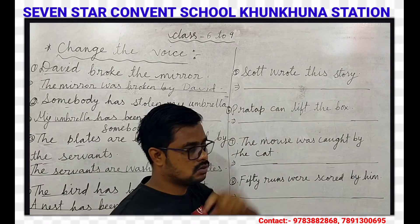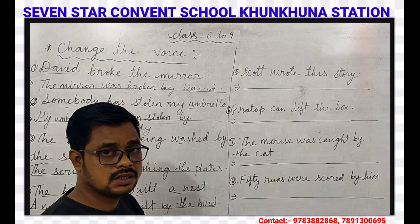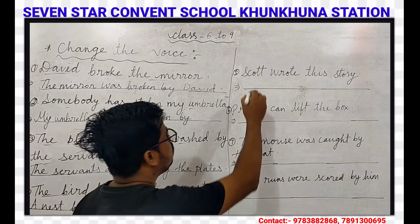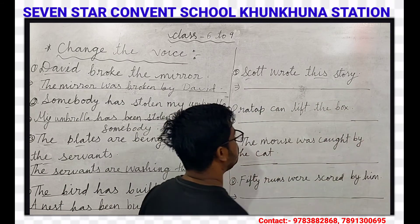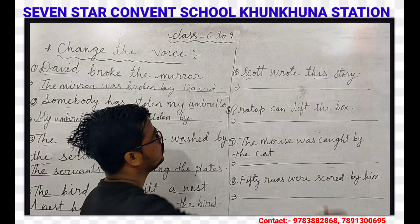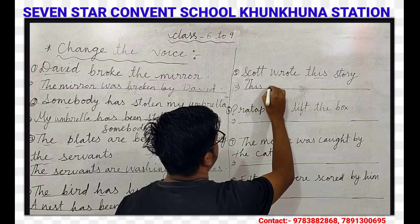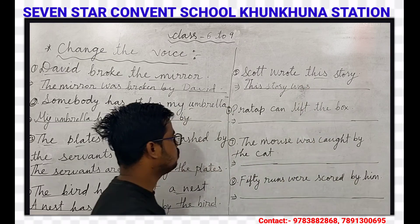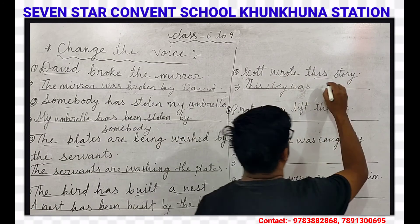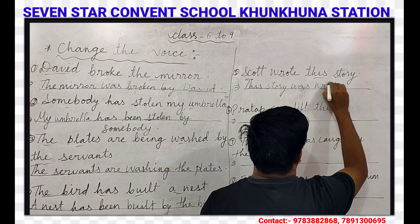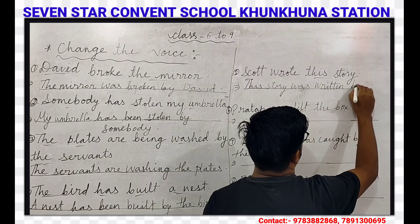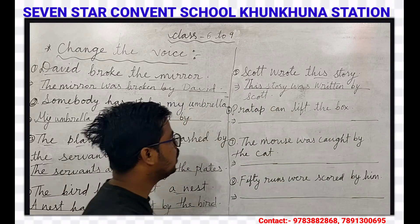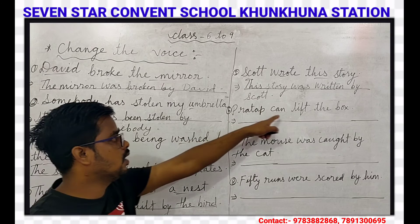Our next question is: Scott wrote this story. This sentence is simple past tense and it is in active voice. We have to change this into passive voice. Scott is the subject and this story is the object. This story will take the place of the subject. This story is singular, so the helping word 'was' will come here. The verb becomes 'written' — third form. This story was written by Scott.